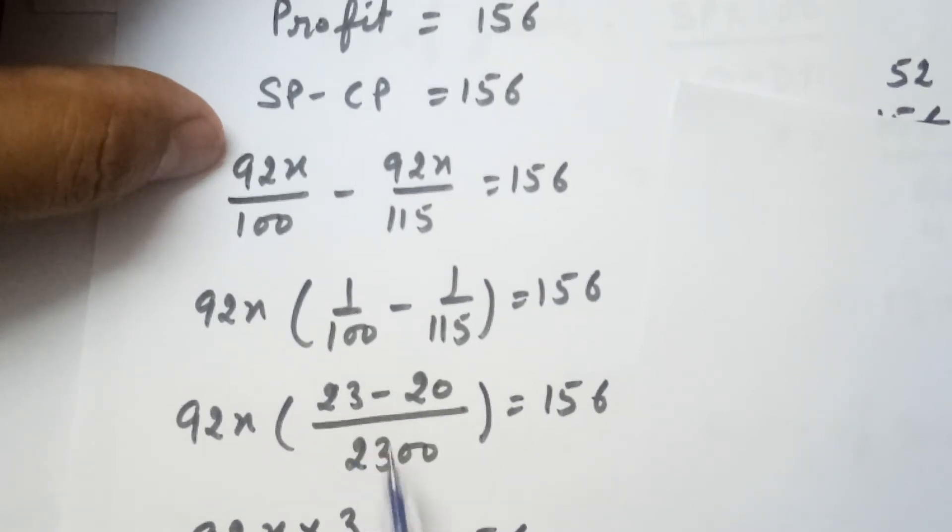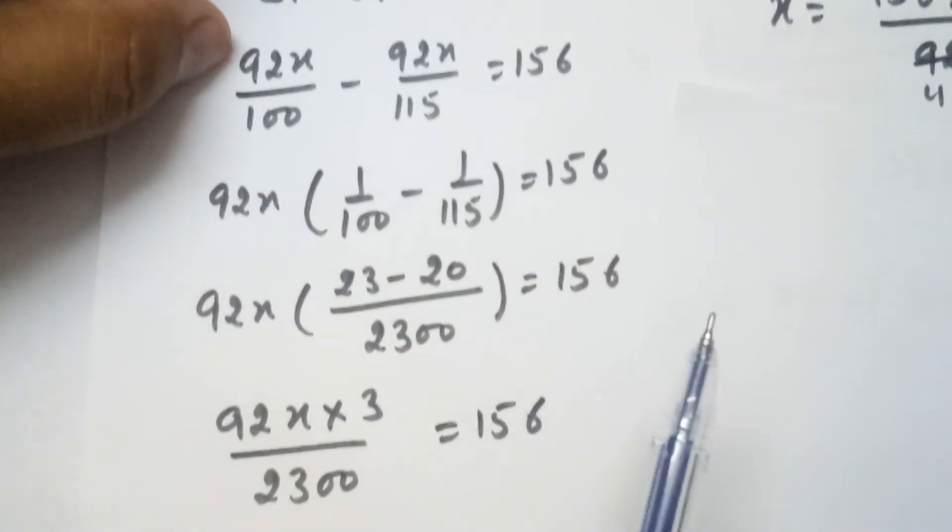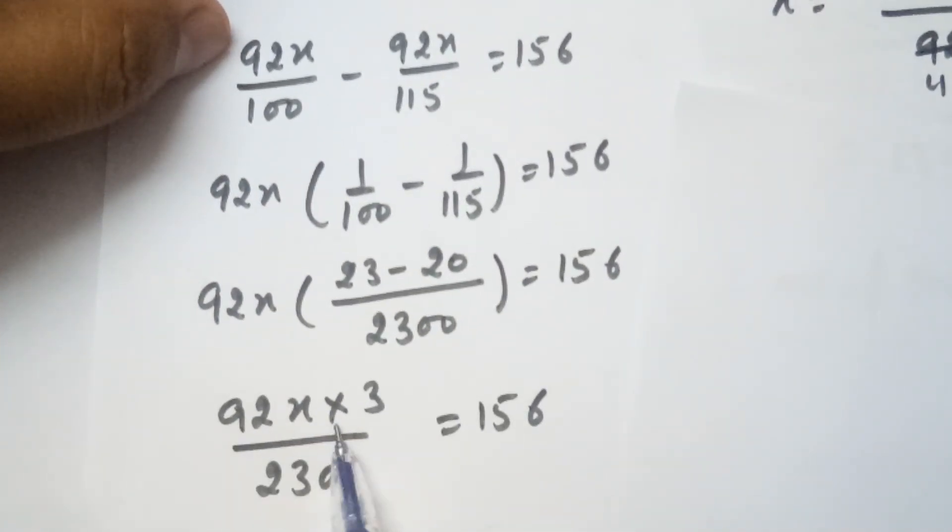You can see here 23 times 100 is 2300 and 115 times 20 is 2300. So in the numerator 23 minus 20 is 3. So this is 92X times 3 over 2300 equals to 156.